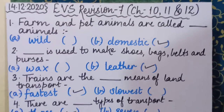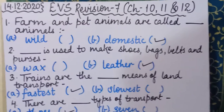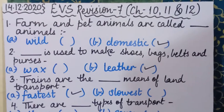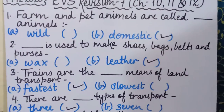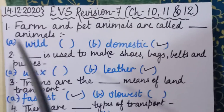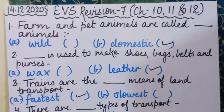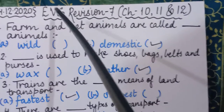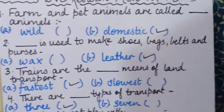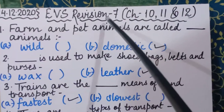When I give you the revision work, you have to complete it in your revision notebooks. Please take out your revision notebooks and write down today's date: 14/12/2020, and give the heading 'EVS Revision Number 7,' because Revision 6 we completed last week.